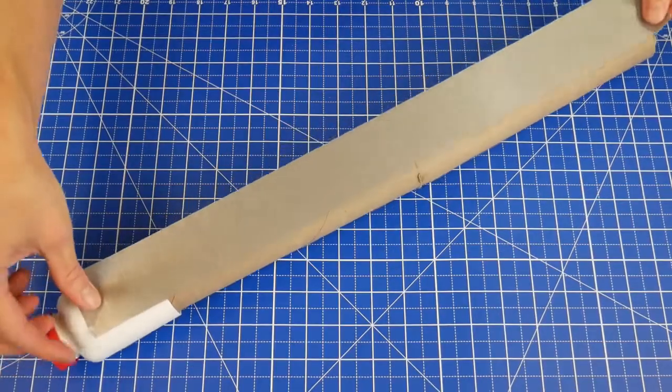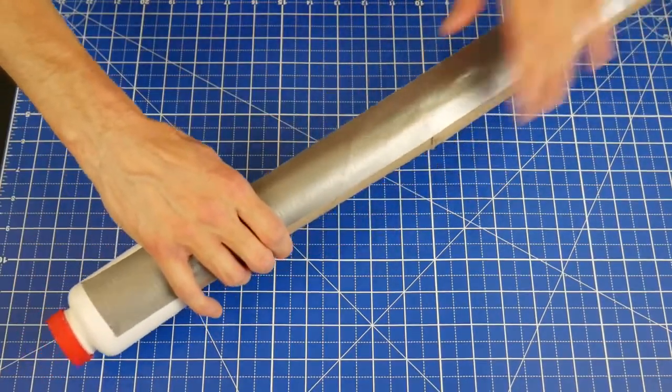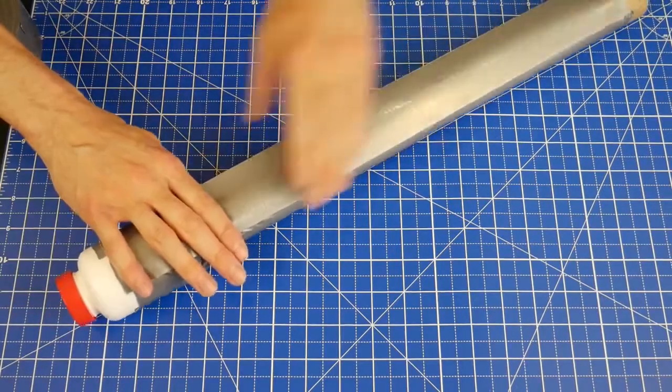Fit the bottle over the tube, then cover the whole thing in long strips of duct tape. This holds it all together and makes it look way better.